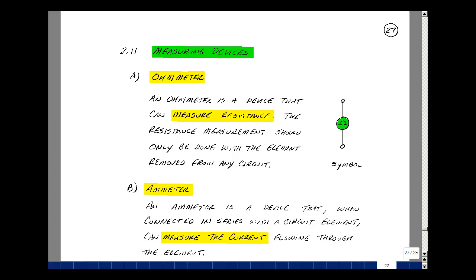The first measuring device we're going to talk about is called an ohmmeter. It's a device that can measure resistance. The resistance measurement should only be done with the element removed from the circuit. The reason for this is that most ohmmeters use a current source to pump current into a sample and then measure the voltage across the sample and then take the ratio. Putting an ohmmeter in a circuit can change the circuit's behavior. The symbol we're going to use is just a circle with the symbol for ohms inside of it.